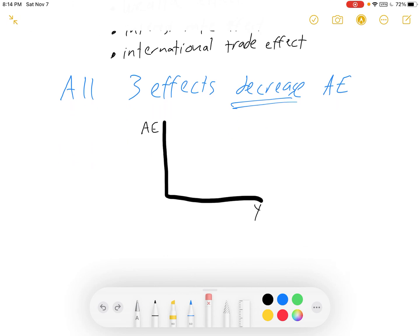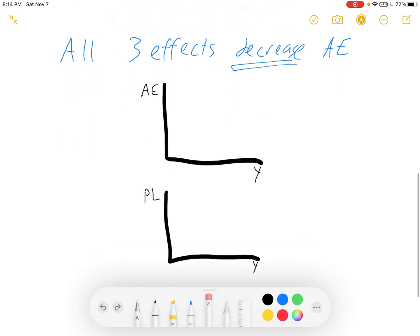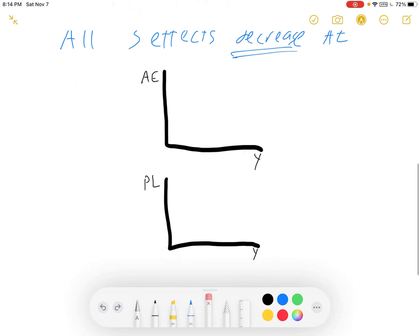Here's one graph. It's going to give us our aggregate expenditure line over GDP. And here's a second graph we're going to compare it to. We're still going to have GDP on the y-axis. We're going to have price level on the vertical axis. So I've swapped out my vertical axis.